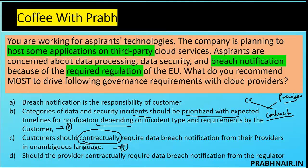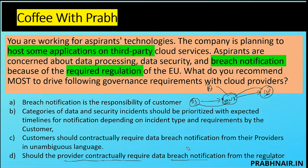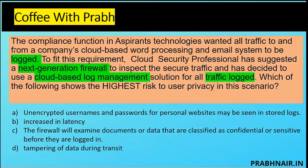Option D says the provider should contractually require data breach notification from the regulator. No — the provider never has that responsibility. For example: I am a data subject who went to a bank, and the bank is hosting services on a cloud service provider. If something happens, the bank reports to the regulator — bank is the one primarily accountable. So D is removed. The closest answer is C, because anything you want addressed must go through a contract. Answer is C.